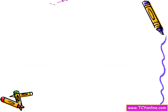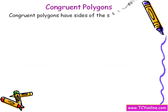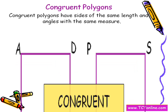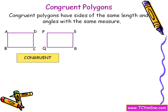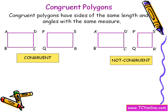Now let's learn about congruent polygons. Congruent polygons have sides of the same length as well as angles of the same measure. For example, these two polygons are said to be congruent because they have sides of the same length and angles with the same measure. While these two polygons are said to be not congruent because they don't have sides of the same length, though they have angles with the same measure.